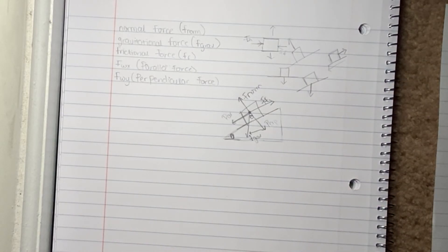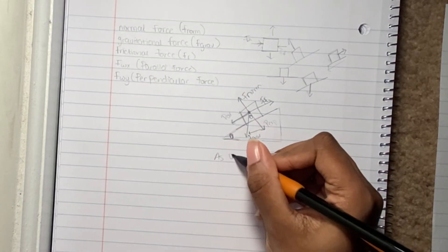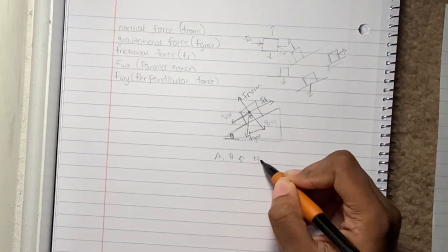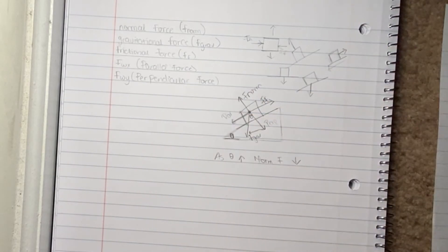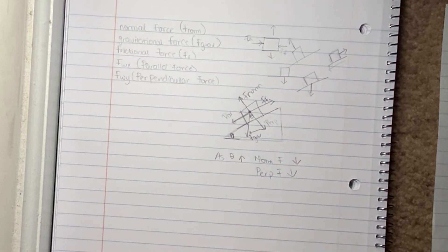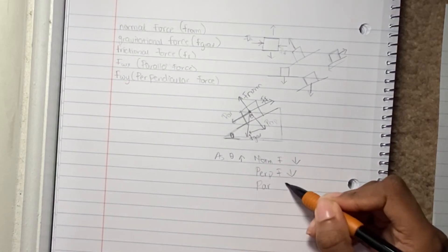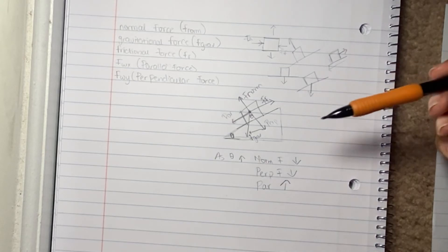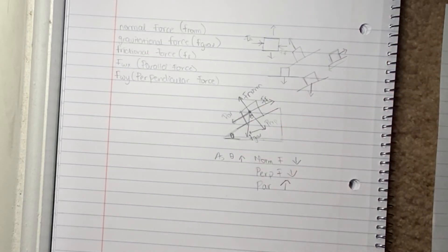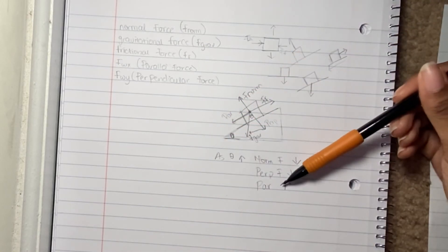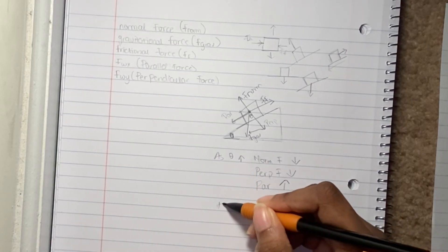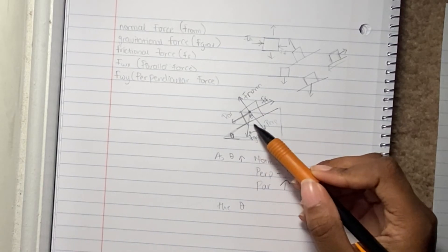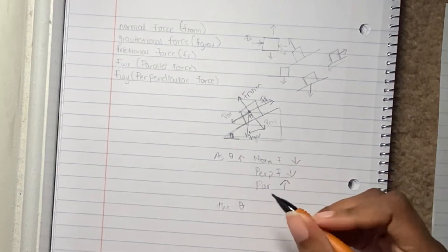As your theta goes up, your normal force is going to go down. Since the normal force and perpendicular force are equal and opposite, the perpendicular force is also going to go down — they're basically the same magnitude. Your parallel force, on the other hand, is going to go up, because as the angle increases the slope gets steeper and it becomes easier for the object to accelerate downwards.